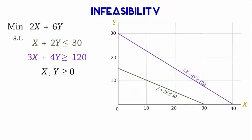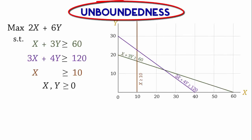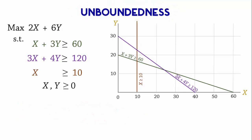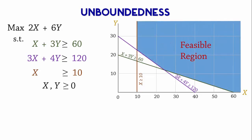The next special case is unboundedness. This is a situation that applies only to maximization problems. Because all these three constraints are greater than constraints, the feasible region is this region shaded here. Since this is a maximization problem and the feasible region is open-ended, we can move the objective function line infinitely without reaching the end of the feasible region. As a result, the situation is called unboundedness.